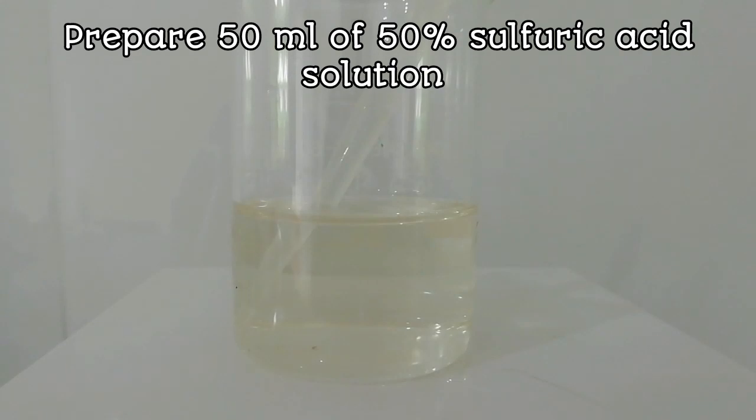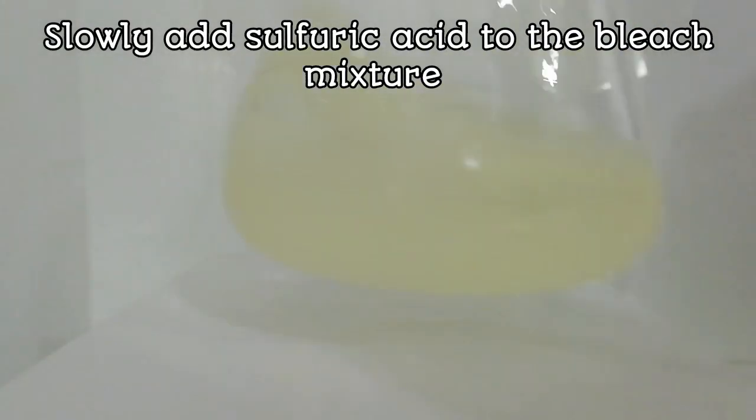The next step is to precipitate out our product. For that, 50 ml of 50% sulfuric acid is added slowly. In this case, first acid reacts with hydroxide and carbonate in the solution. Then, hydrazine sulfate starts to precipitate out.